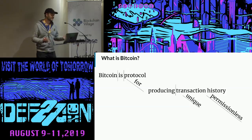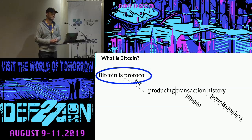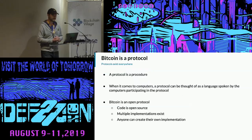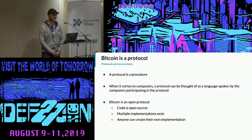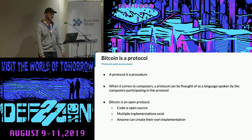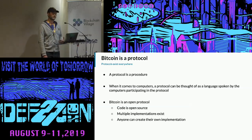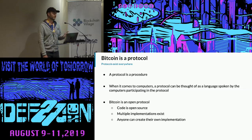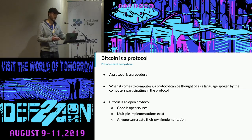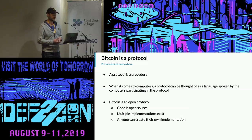I like to diagram sentences — it helps me understand them. So we'll start here: Bitcoin is a protocol. What is a protocol? Protocols exist everywhere. A protocol is nothing more than a procedure. When it comes to computers, a protocol can be thought of as a language spoken by computers participating in the protocol. But you can think about protocols as existing outside of computers as well. When you drive on the roads, you're following US laws of driving — that's a protocol. You yield, if you're turning left, to oncoming traffic. Those sorts of rules are all part of the driving protocol in the United States.